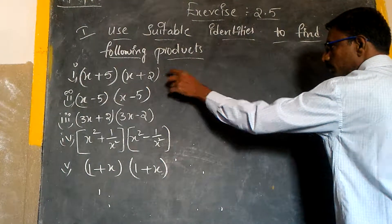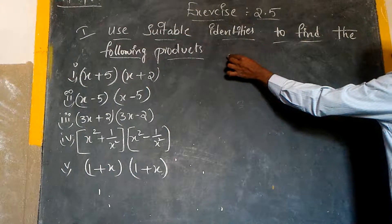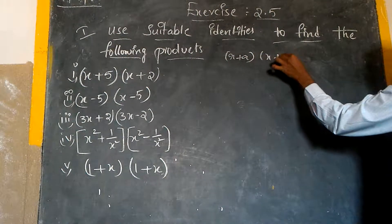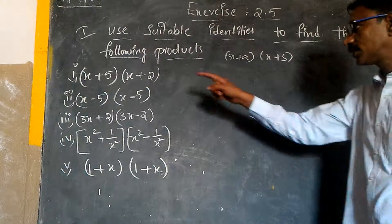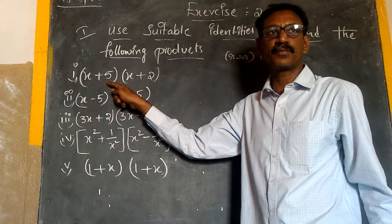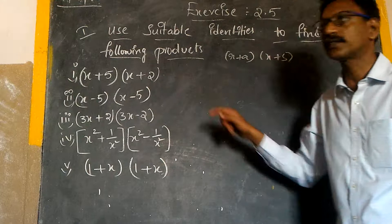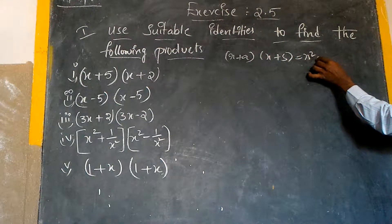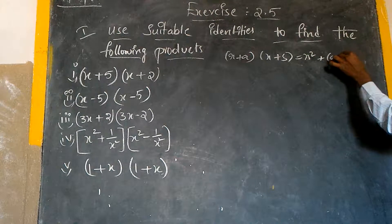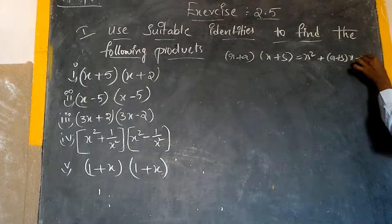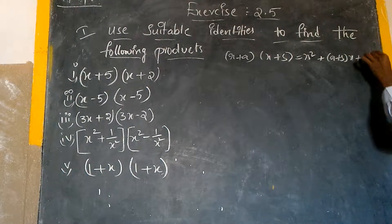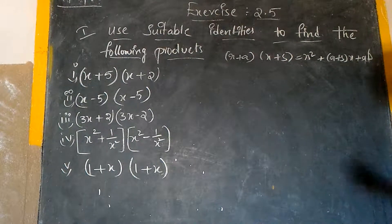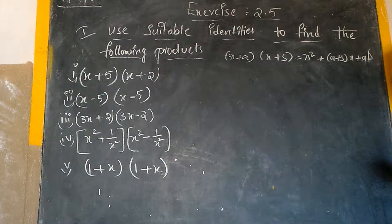By observing this one, this is in the form of (x + a)(x + b). This we can write as x² + (a + b)x + ab. This is in the form like this. First, recognize what is a and what is b from the products.